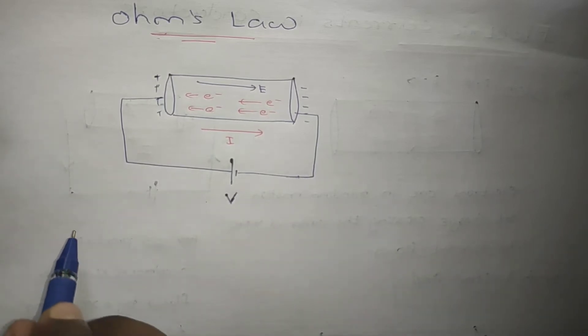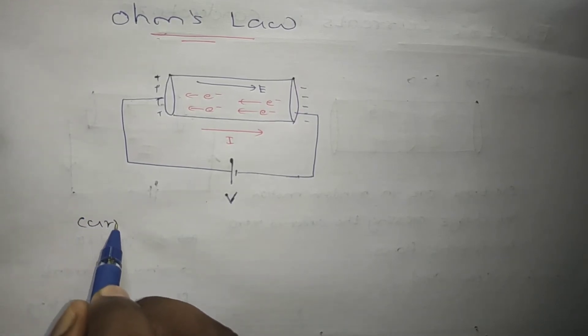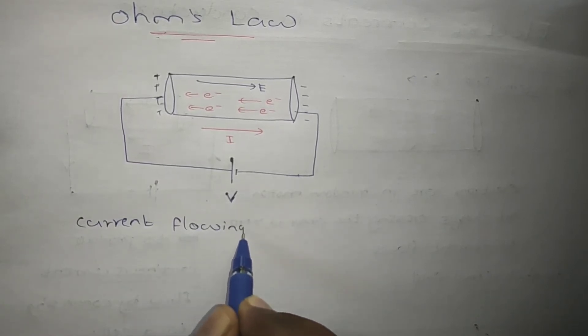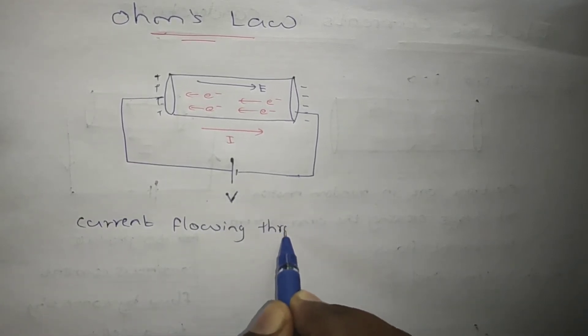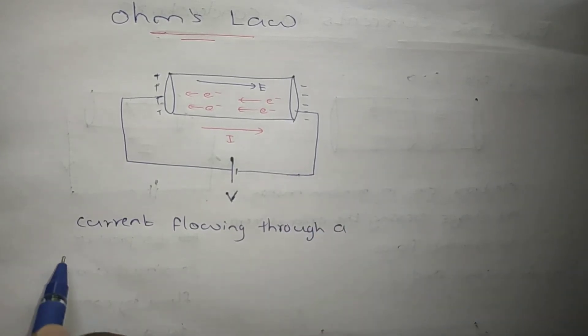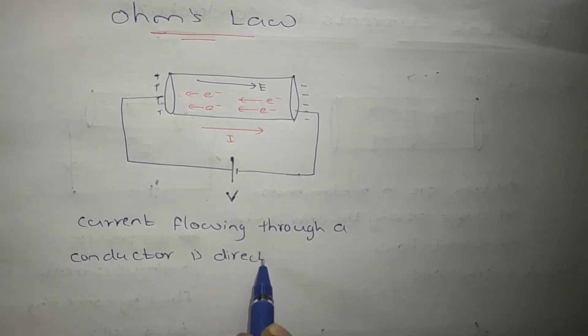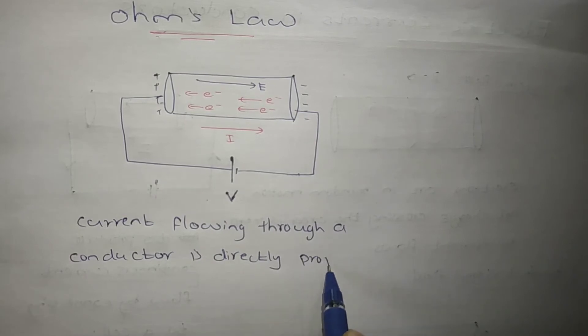His statement is that current flowing through a conductor is directly proportional to the potential difference across the conductor.